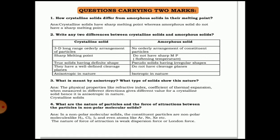Second question: write any two differences between crystalline solids and amorphous solids. Make two columns. Crystalline solids have a 3D long-range orderly arrangement of particles; amorphous solids have no orderly arrangement. Crystalline solids have a sharp melting point; amorphous solids do not. Crystalline solids are true solids; amorphous solids are pseudo-solids. Crystalline solids are anisotropic; amorphous solids are isotropic.